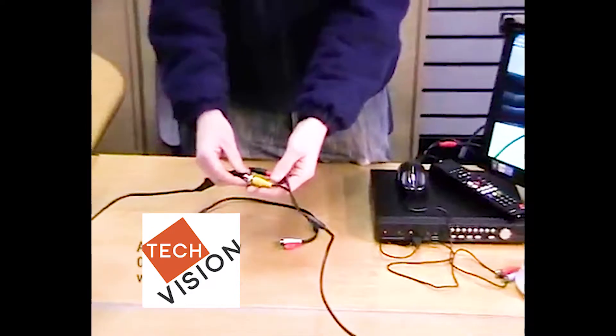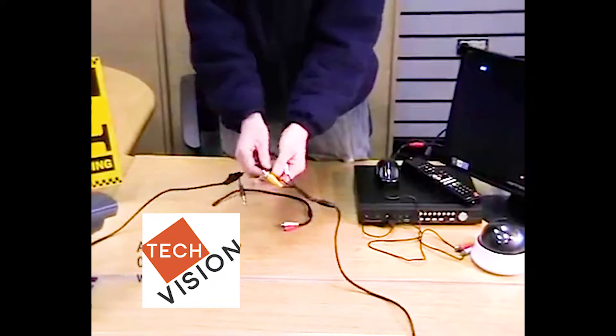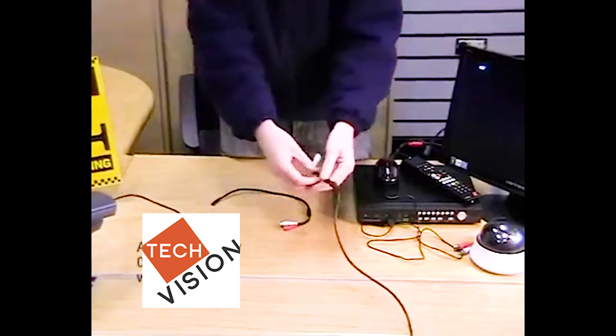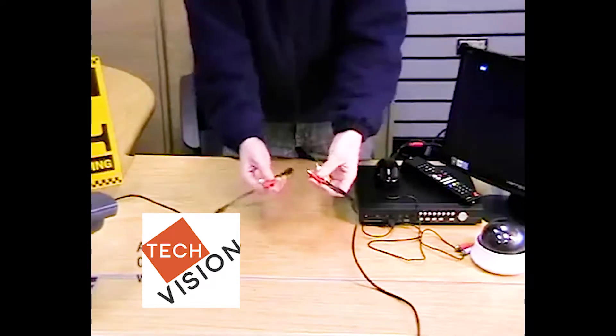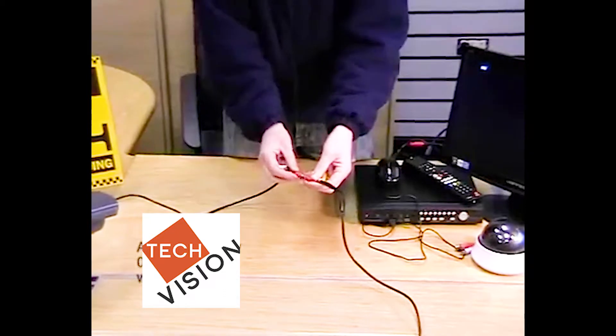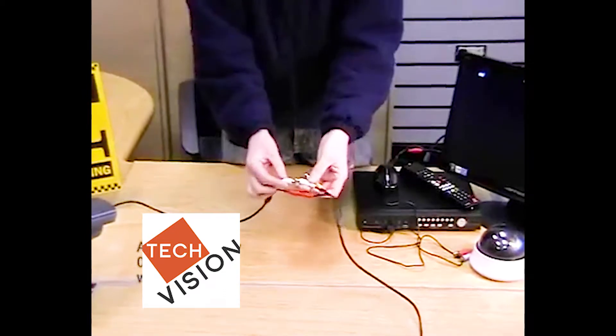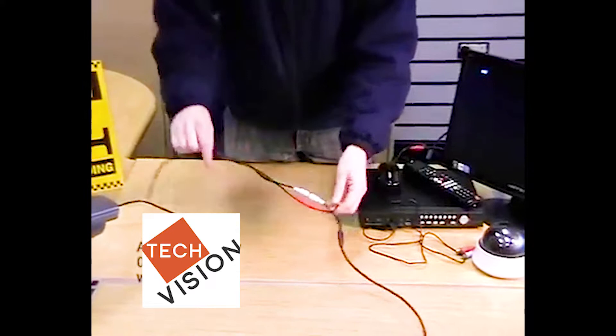So what we're going to do is disconnect this powered lead, set the signal off, and basically we have red to red, male to female for the power, white to white, male to female for the audio.